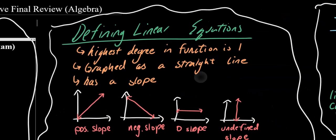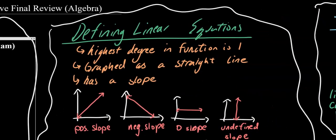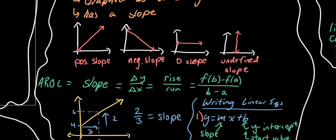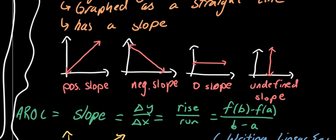Linear functions, or linear equations, are just functions with a degree of 1 and are always straight lines when drawn on a graph, and they always have a clear slope. Right here we see some examples of a positive slope, negative slope, zero slope, and undefined slope.